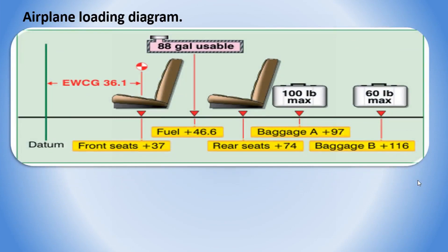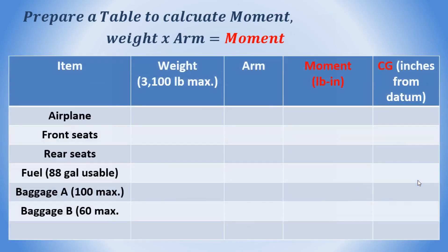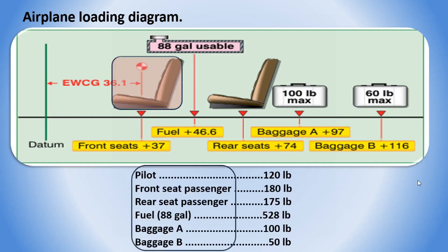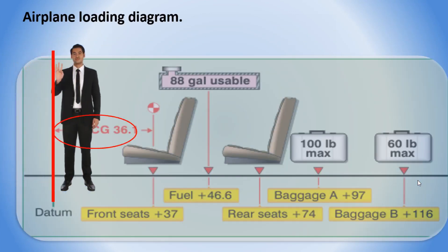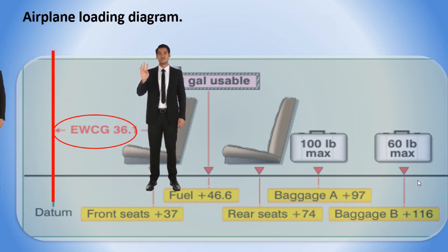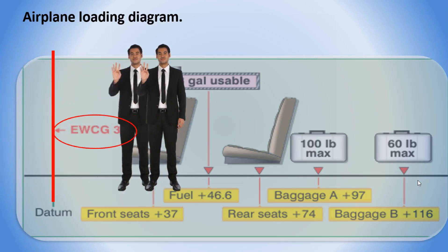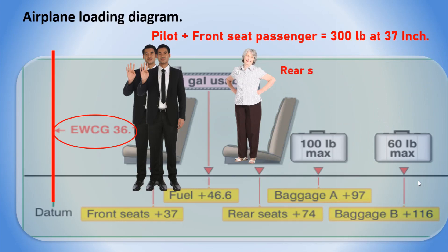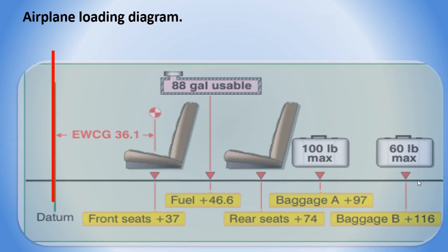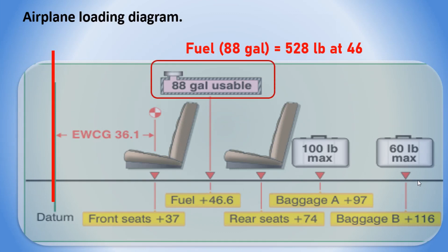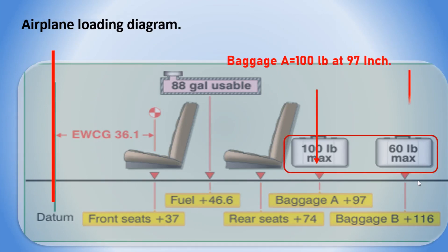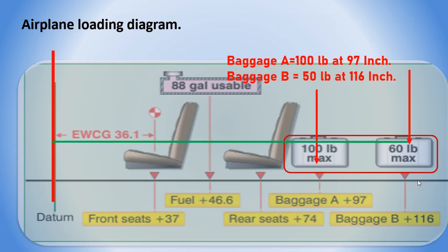In the airplane loading diagram example: pilot weight is 180 pounds and front seat passenger is 120 pounds, located 37 inches aft of datum — combined weight 300 pounds. Rear seat passenger weight is 175 pounds, located 74 inches aft of datum. Fuel is 88 gallons (528 pounds) at 46.6 inches aft of datum. Baggage A is 100 pounds maximum at 97 inches, and Baggage B is 50 pounds at 116 inches aft of datum.